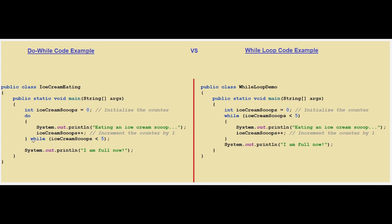In the second example using a while loop, we initialize a variable called ice cream scoops to zero. Then the while loop checks if ice cream scoops is less than five. As long as this condition is true, the loop keeps executing the code inside.